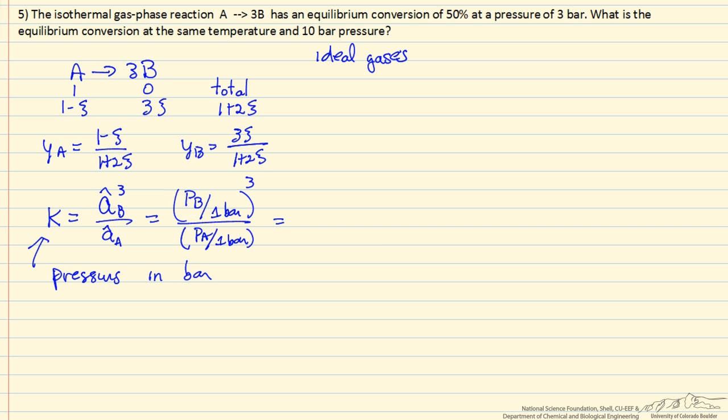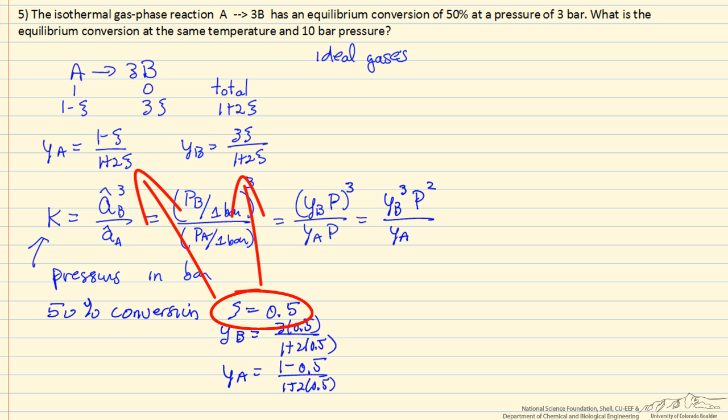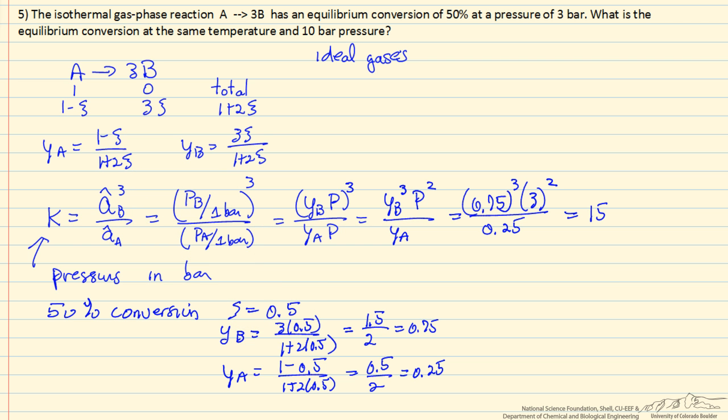We can write the pressures, partial pressure of B and partial pressure of A, in terms of the mole fraction times the total pressure. So mole fraction of B cubed, with one power of the pressure cancelled. At 50% conversion, we know the mole fraction because that means the extent is 0.5. So I calculate the mole fractions, which I can substitute here, and this gives us an equilibrium constant of 15.2.